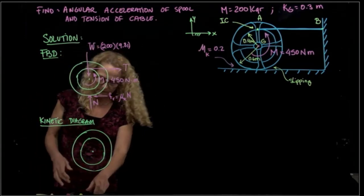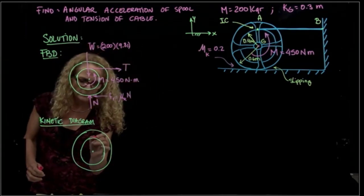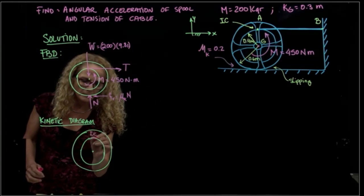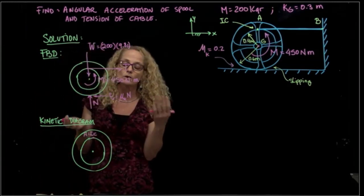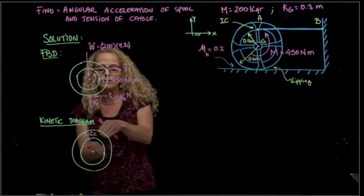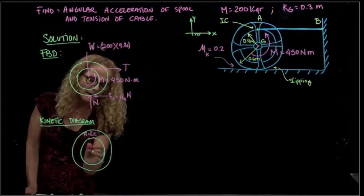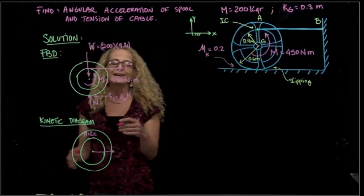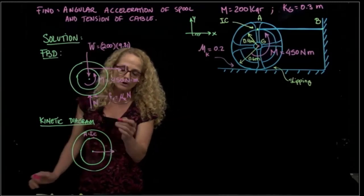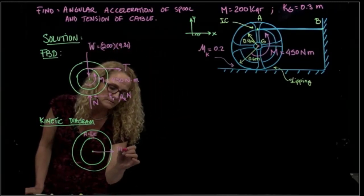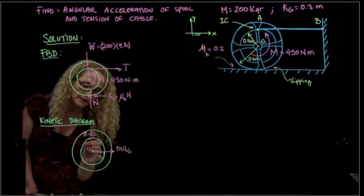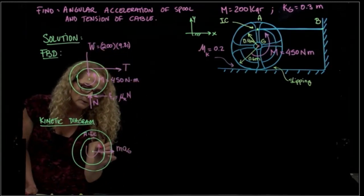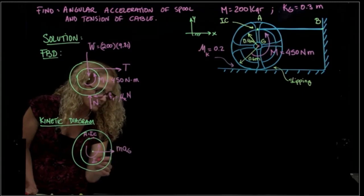Since we know that our center of rotation is right here, this is point A, equal to our instantaneous center of rotation, we know that we rotate about that point. So we will have a linear velocity of the center of mass, and we will have rotation about that point.